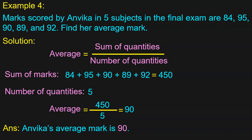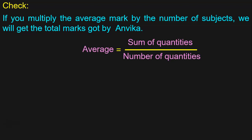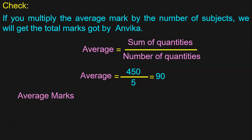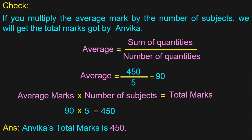Now I am going to show you another method to check if the answer that you have got is correct. If you multiply the average mark by the number of subjects, we should get the total marks got by Anvika. Average was 450 by 5, which is 90. To find out the total marks of Anvika, multiply average marks by number of subjects: 90 into 5 is 450, which is the total marks got by Anvika. So the average you found is correct. This is the method to check if your sum is correct. Anvika's total marks is 450.